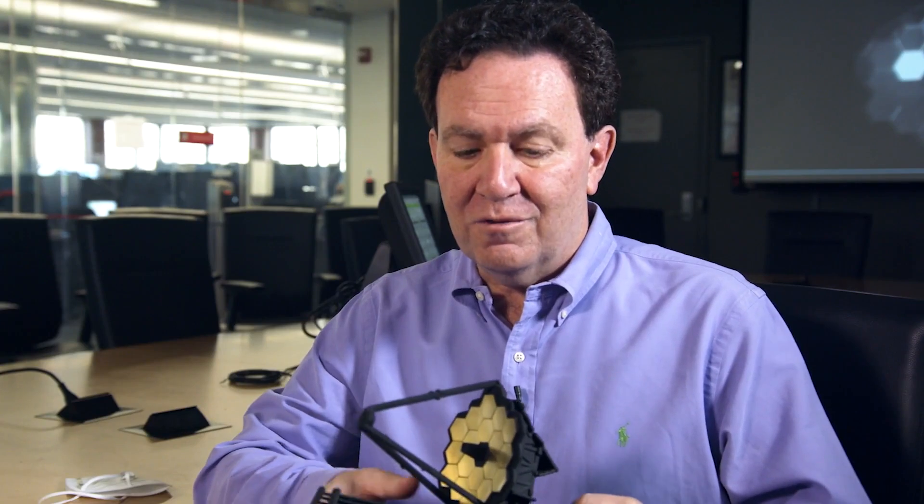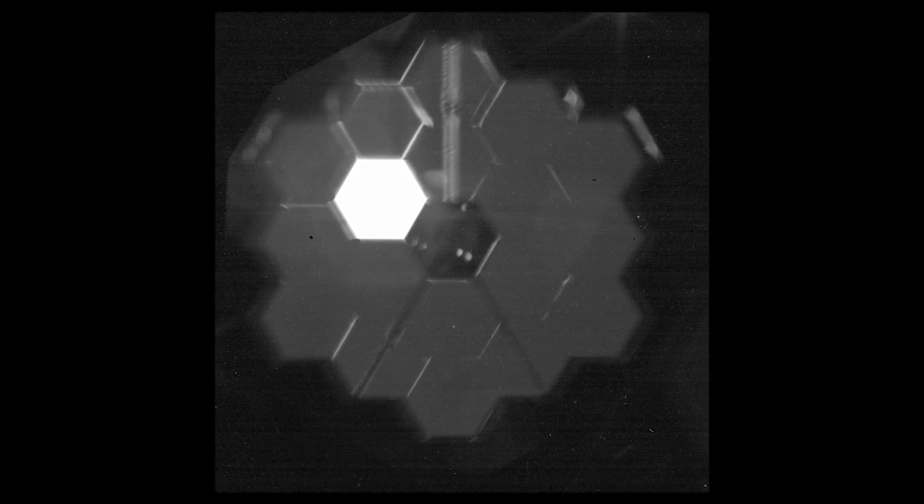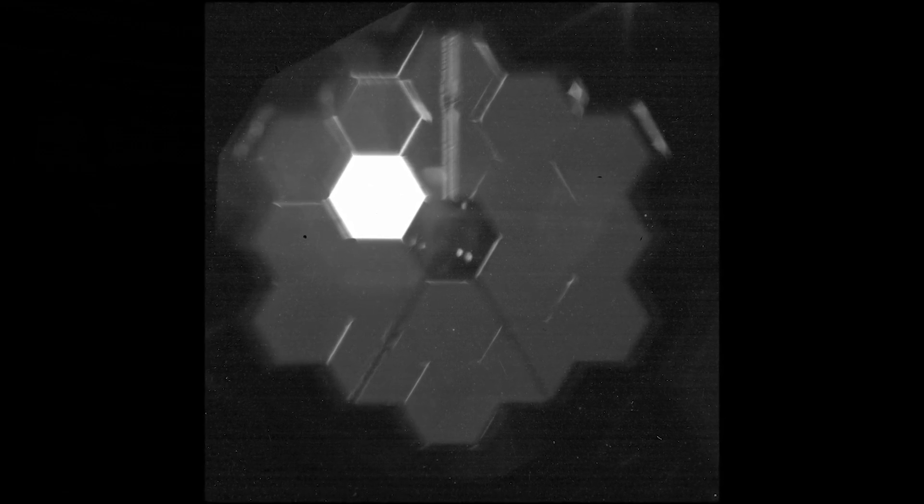We also took a selfie of the primary mirror. We took an image of the primary mirror, and that helps us understand the alignment of the telescope, especially the primary mirror, to the camera itself and the instruments. There's actually a special lens in the mirror front camera that you can put in, and it allows you to take a picture of the primary mirror itself.